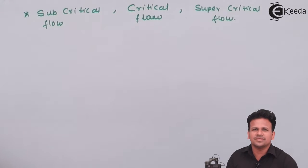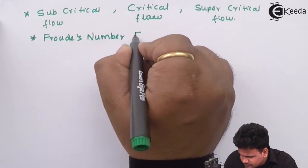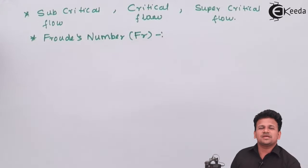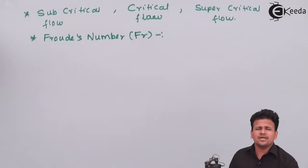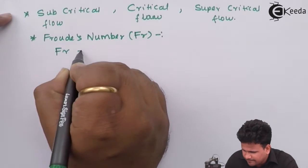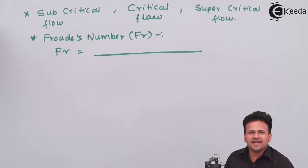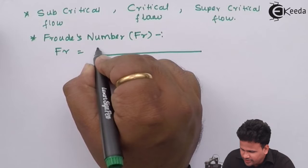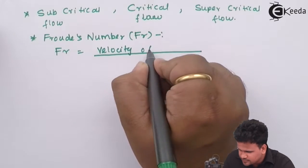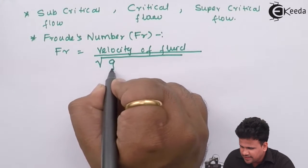Let us define what Froude number is. Just as Mach number is a dimensionless quantity, the Froude number is also a dimensionless quantity — it is the ratio of two similar quantities. The Froude number is defined as the ratio of the velocity of the fluid to the square root of G multiplied by D.